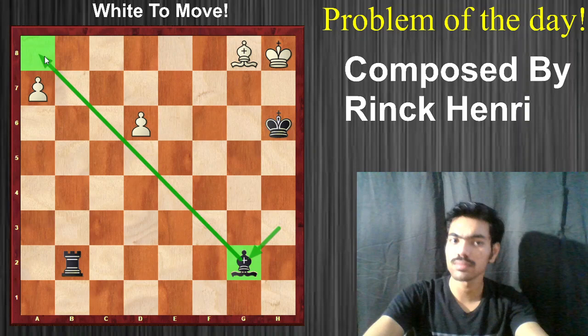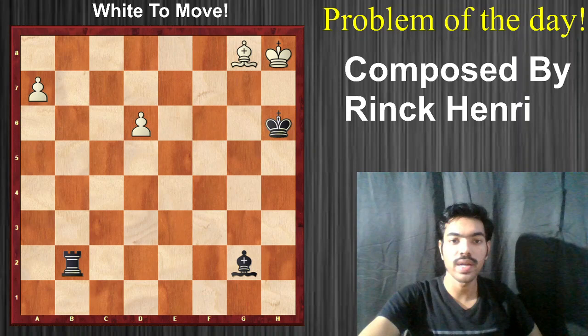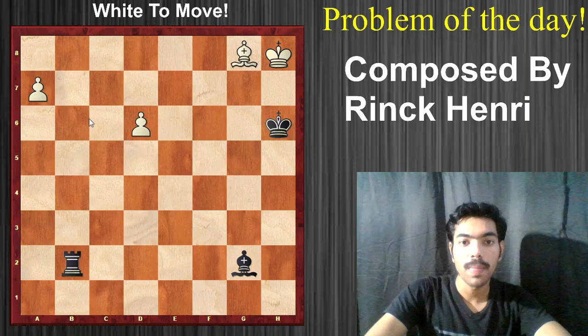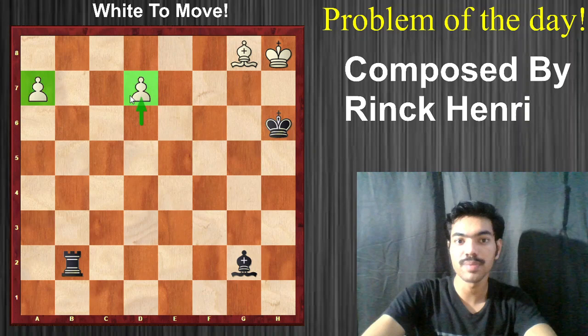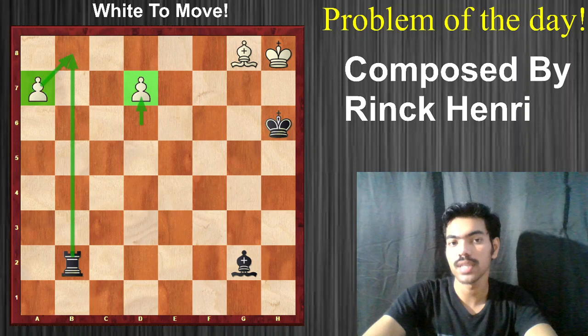The bishop goes to g2, controlling the entire diagonal and stopping the a-pawn, handling it very well. So how does white continue now? There is an excellent move: white can play pawn to d7. The pawn is running away — this pawn has been handled, but what about this one?